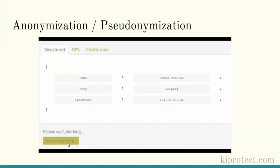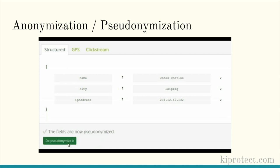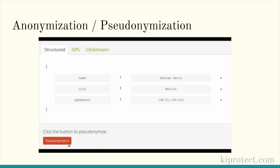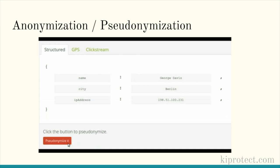Now that we're tracking data provenance and asking for consent, the next thing is moving towards data privacy. Data privacy should be a provision in these new data contracts — this is who I'm going to share your data with, and this is how I'm going to protect your privacy when I share it, both internally when teams access your data and externally with partners or data marketplaces.